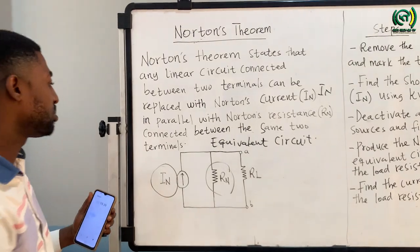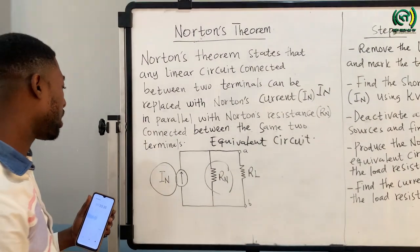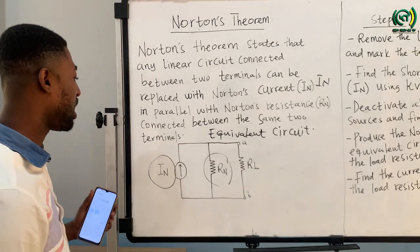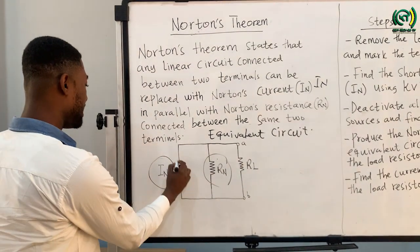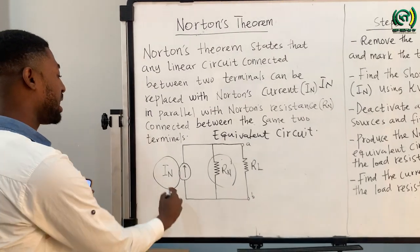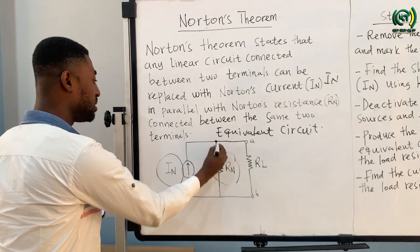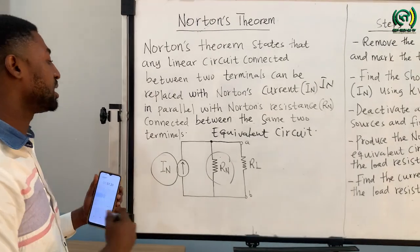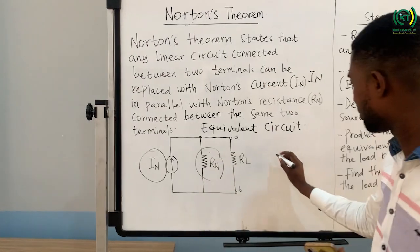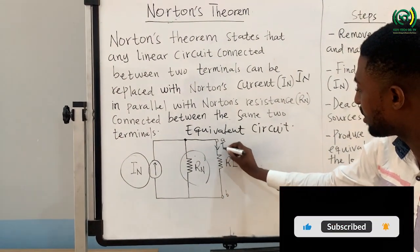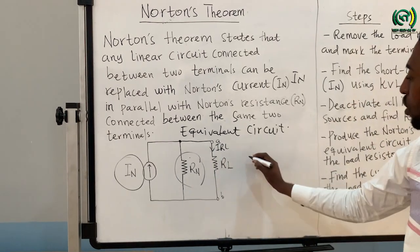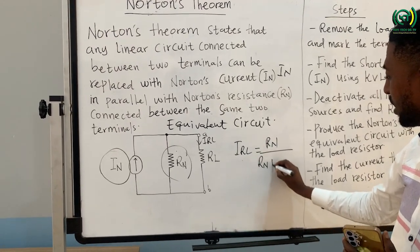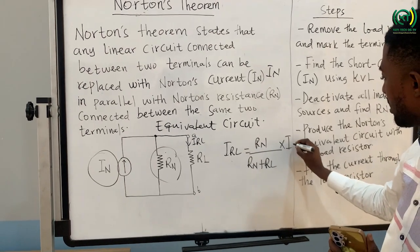The load resistor is connected in parallel with the Norton's equivalent resistance. To calculate the current flowing through the load resistor, remember it is connected in parallel with the Norton equivalent resistance. The IN, which is Norton's current, is the total current supplying these loops. When this current gets to the junction, it will split. To calculate the current flowing through the load resistor, we use the current divider rule. The current IRL flowing through the load resistor equals RN over (RN plus RL) times IN.